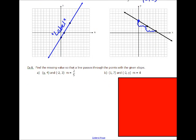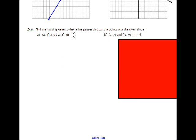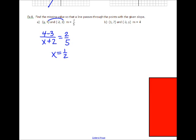Find the missing value. So a line passing through the points has the given slope. That's strictly algebra. I want 4 minus 3 over, now I went in this direction, so I've got to continue x minus negative 2 to equal 2 fifths. And you're just going to cross multiply and solve there. You should get x equals 1 half. And then you can do the next one on your own. I should get 7 minus y over 1 minus negative 3, so that should be equal to 4 over 1. And I'm going to cross multiply and solve that. And I should get y equals negative 9.